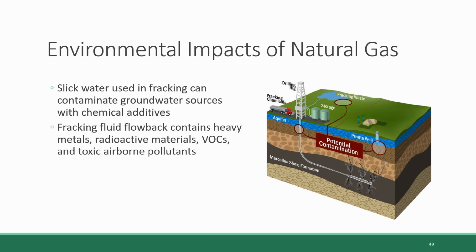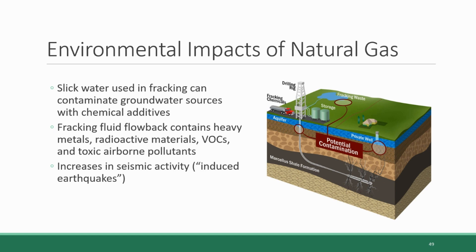Fracking also brings about increases in seismic activity, also known as induced earthquakes — tremors and earthquakes that are not naturally occurring but caused by human activity. In 2016, the US Geological Survey released a report concluding that up to 7.9 million people in parts of Kansas, Colorado, New Mexico, Texas, Oklahoma, and Arkansas were facing the same level of earthquake risk as people in California, which lies on the San Andreas fault line. This new risk is a direct result of fracking activity.